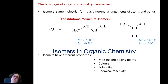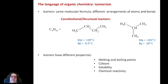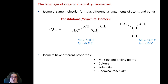Another fundamental thing we need to get our heads around in organic chemistry is the concept of isomerism, of isomers. Isomers are compounds that have the same molecular formula — they have the same number of atoms and the same type of elements — but they are different compounds.